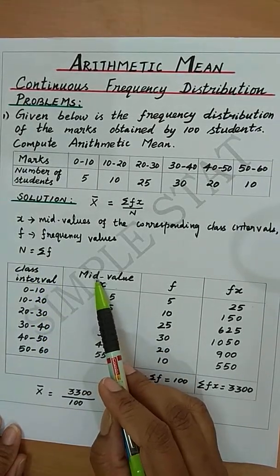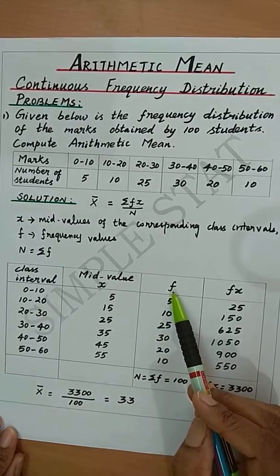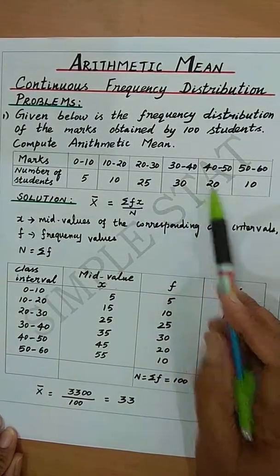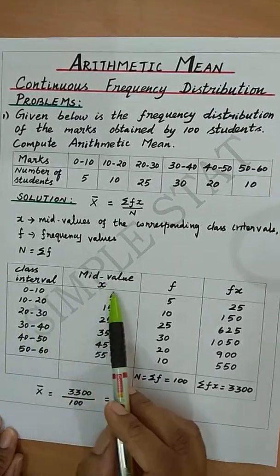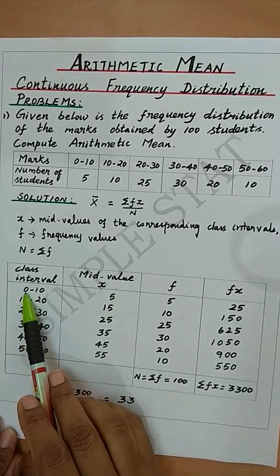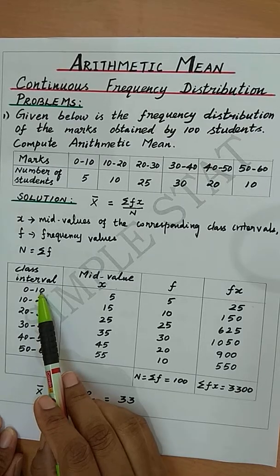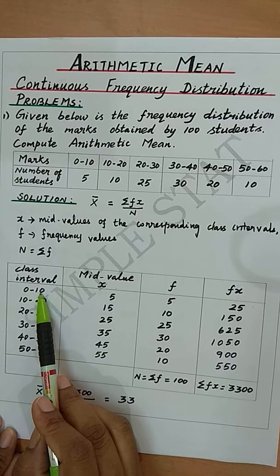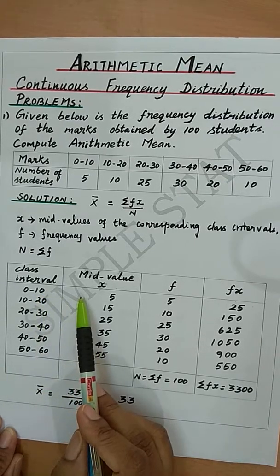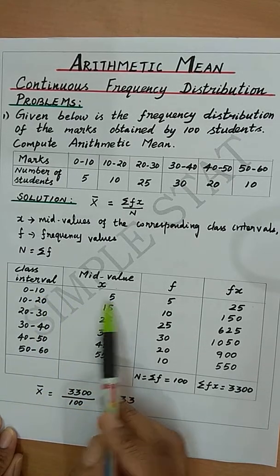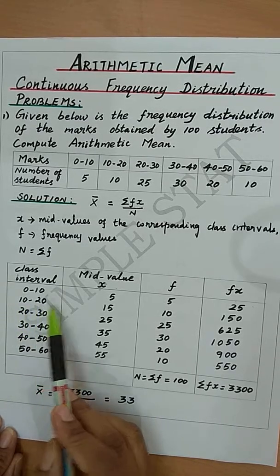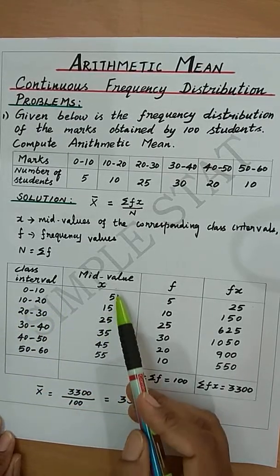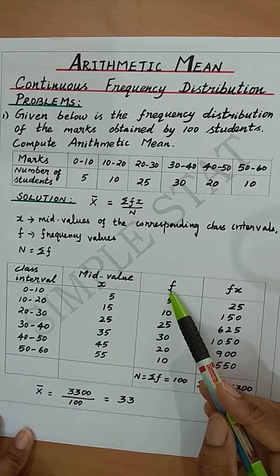Proceeding with the calculation, first write the class interval, then the mid value, then the given frequency value which is number of students, and finally find fx. For the mid value, add the lower limit and upper limit and divide by 2. Here, 0 + 10 / 2 = 5; 10 + 20 / 2 = 15, and so on.